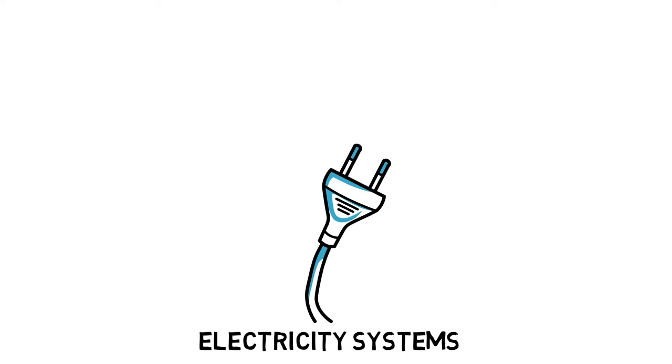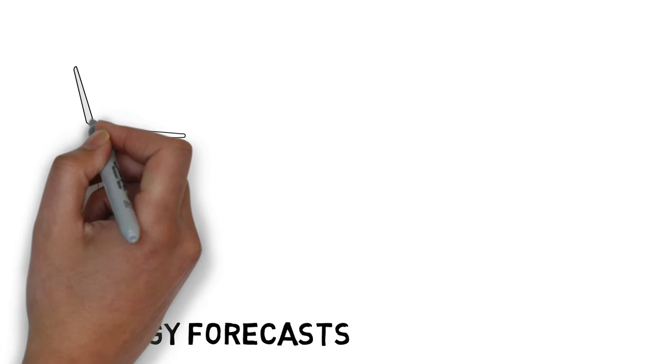So let's get started with electricity systems. They are responsible for a quarter of human-caused greenhouse gas emissions. Machine learning can help in many ways to reduce their carbon footprint. Let's have a look at three solutions regarding energy forecasts, methane leaks and the discovery of new materials.